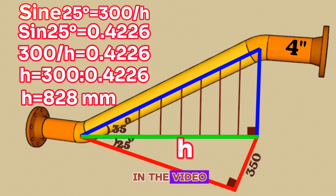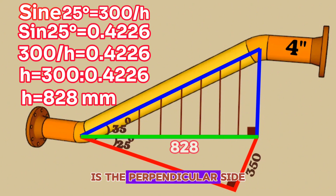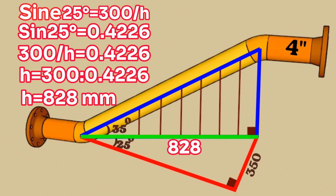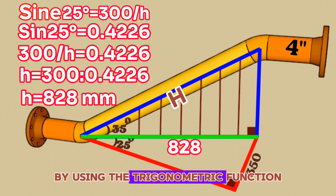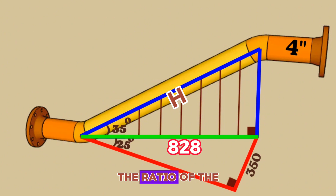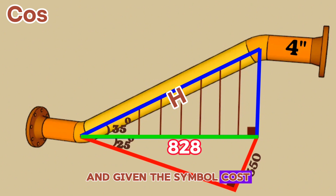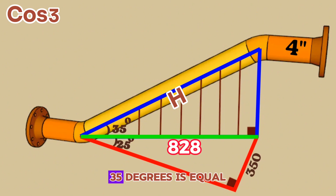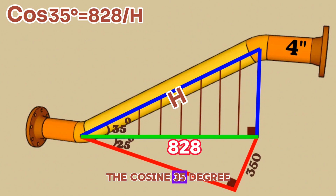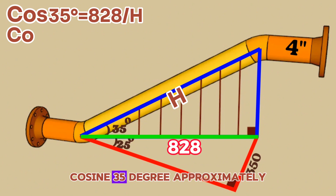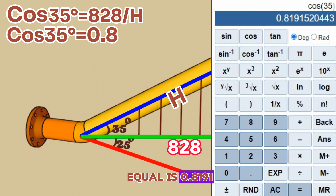As we said earlier in the video, this green colored line is the perpendicular side of the blue right triangle. Let's calculate the hypotenuse of the right triangle colored blue, marking it with the letter big H. We can find the hypotenuse by using a trigonometric function. The ratio of the adjacent side of a right triangle to the hypotenuse is called the cosine, given the symbol cos. In other words, cosine 35 degrees equals the ratio of 828 millimeters to the hypotenuse H. We will use a scientific calculator to find cosine 35 degrees. Cosine 35 degrees is approximately equal to 0.8191.